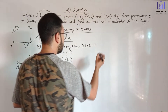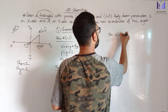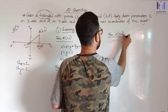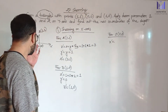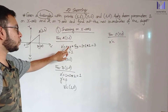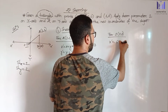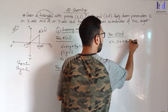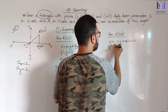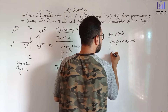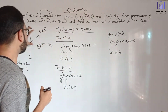For point O(0,0): X prime equals X plus Y into shX. X equals 0, Y equals 0, multiplied with 2. Ultimately X prime equals 0. Y prime equals Y which is 0. So O prime equals (0,0).